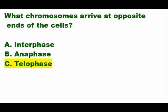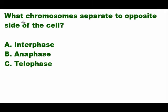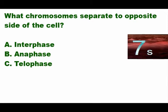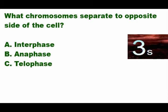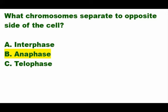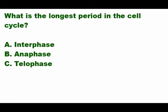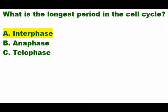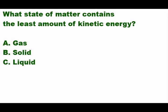Next question: what phase is it when chromosomes separate to opposite sides of the cell? Is it A) interphase, B) anaphase, or C) telophase? The answer is letter A — interphase. That's the longest period of the cell cycle.